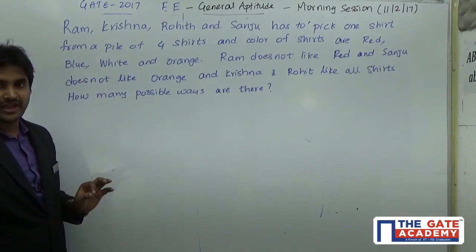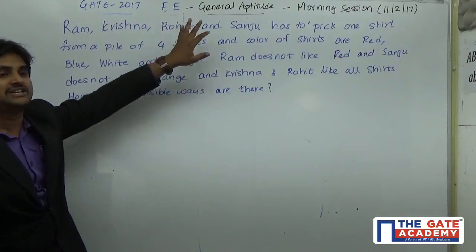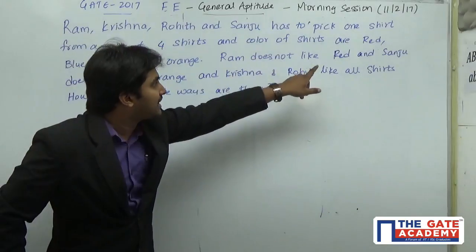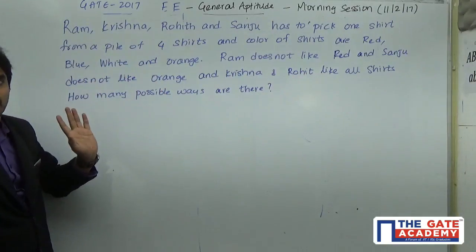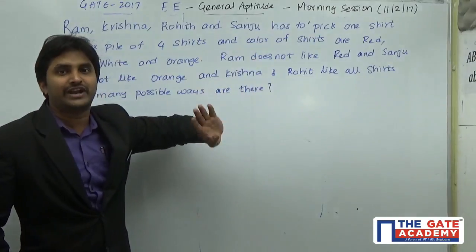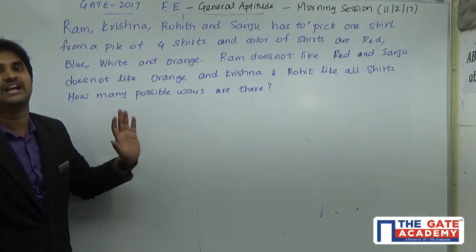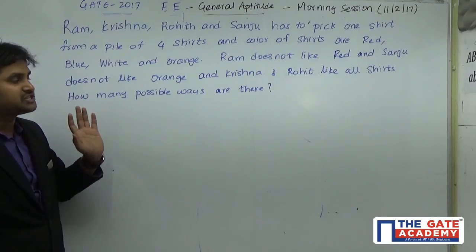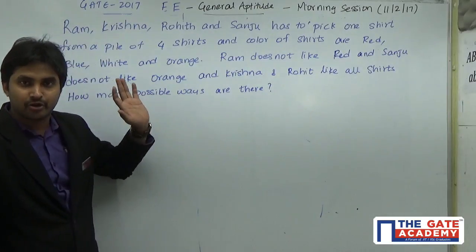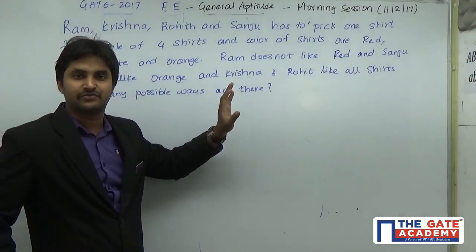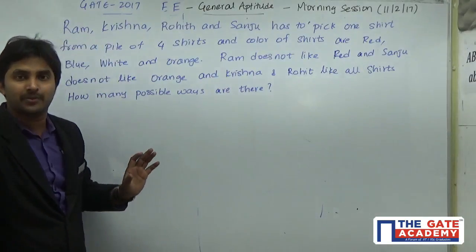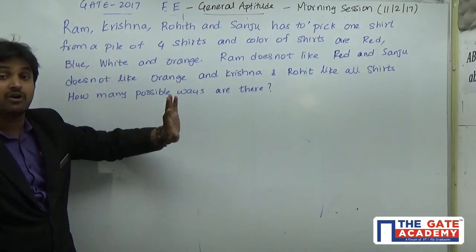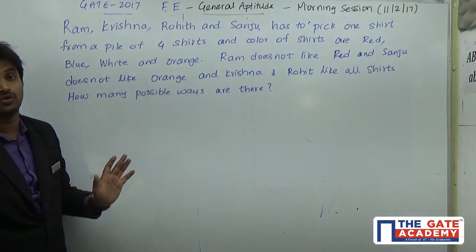We have to calculate all the permutations taking into consideration the given conditions — Ram does not like red and Sanju does not like orange. Our approach is to first find the total number of possibilities. There are four shirts and four people, so the total number of arrangements is 4 factorial, which is equal to 24.